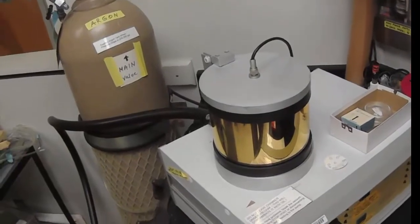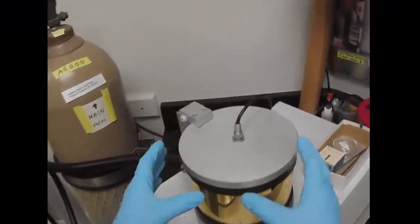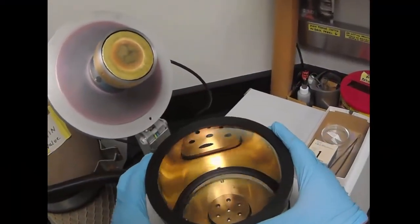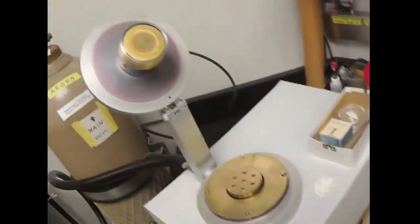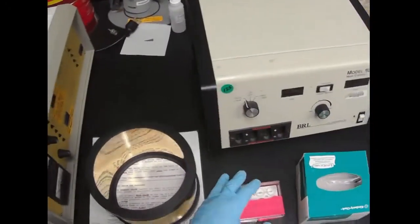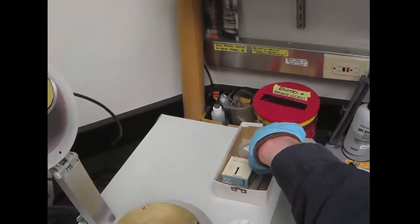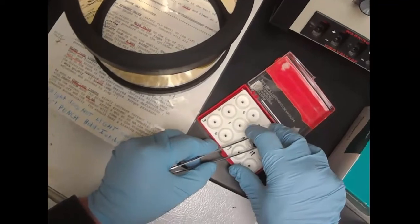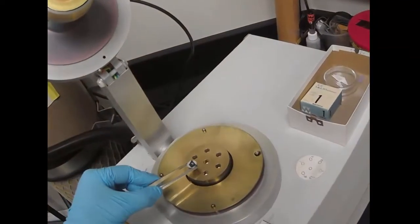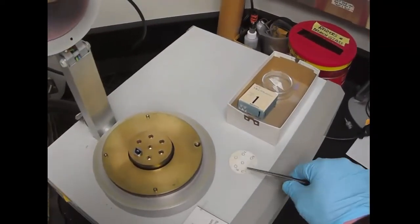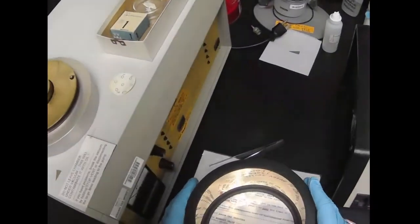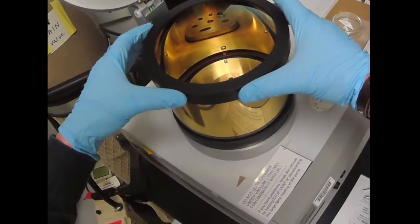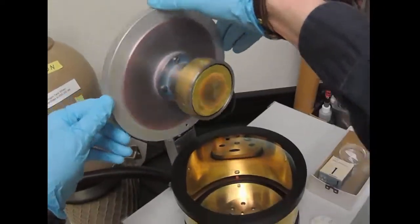To coat the sample with gold, we're going to use this sputter coater. You can see the chamber is already coated with gold. Here's our gold anode source. We're going to place our sample into the chamber at a known position. There's a little map here if you have more than one sample at a time. We don't want any dust or grease on the gasket, so make sure that it's clean.